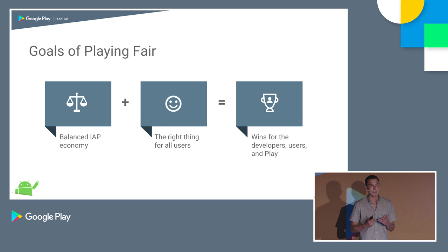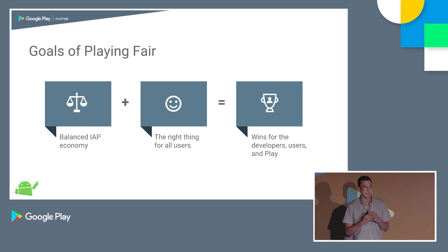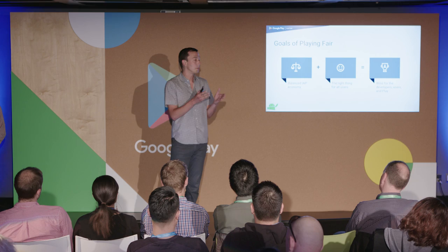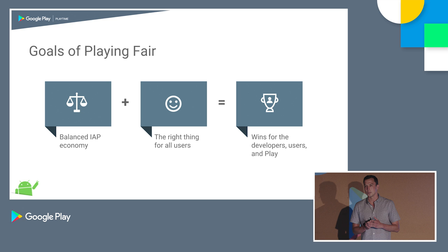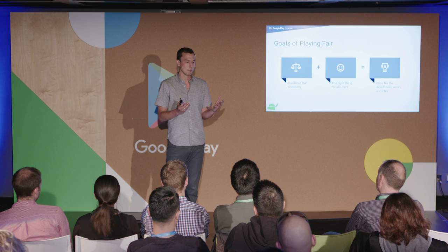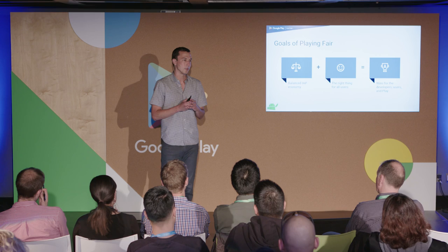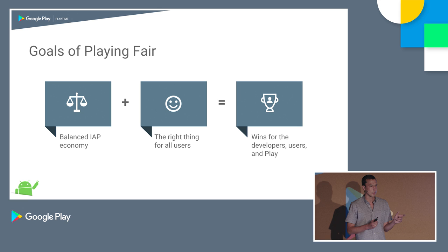When we started down the path of playing fair, we started with two main goals. The first was that we wanted a balanced in-app purchase economy. When you have a game with a currency, users pay money for that currency, assigning a monetary value to it — and we want you to be able to preserve that. You have full control over that. The second thing is that we want to do the right thing for all users: a fair and rewarding experience for good users, while deterring the bad users. Combining those two objectives, we hope to achieve wins for you the developers, the users, and us as Google Play.